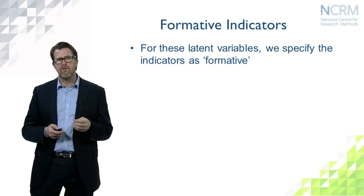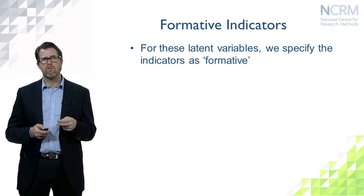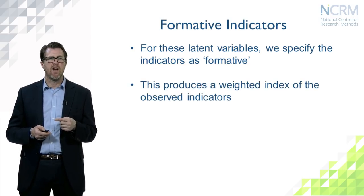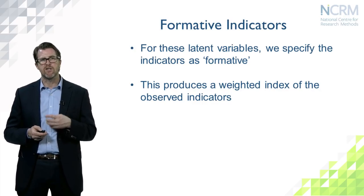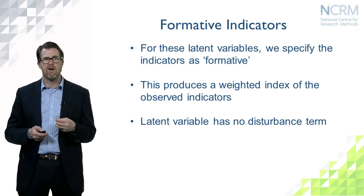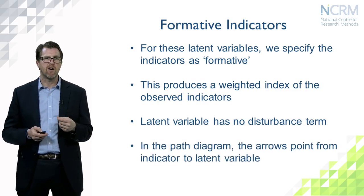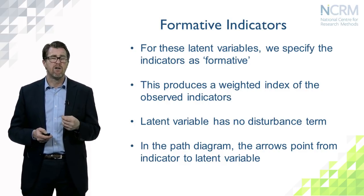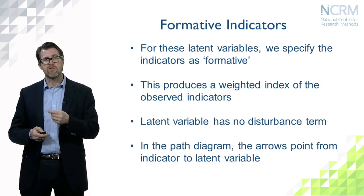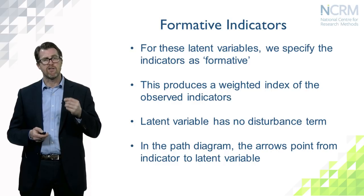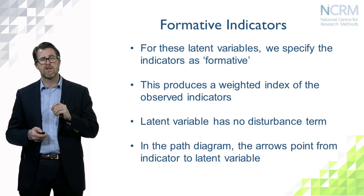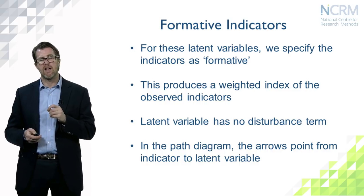With formative indicators, we are dealing with a different sort of latent variable — essentially a weighted index of the observed indicators, without a disturbance term and no error. It is not the same kind of variable as we would have with reflective indicators. The key thing is that in the path diagram the arrows point from the indicator to the latent variable rather than the other way round. The procedures for estimating this kind of model differ, but the main concern is to understand the conceptual difference in how indicators relate to latent variables.